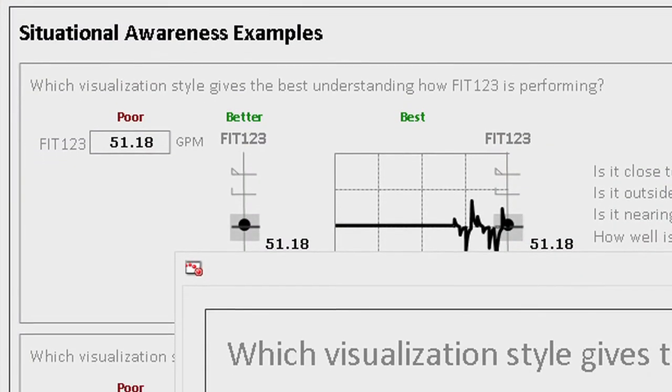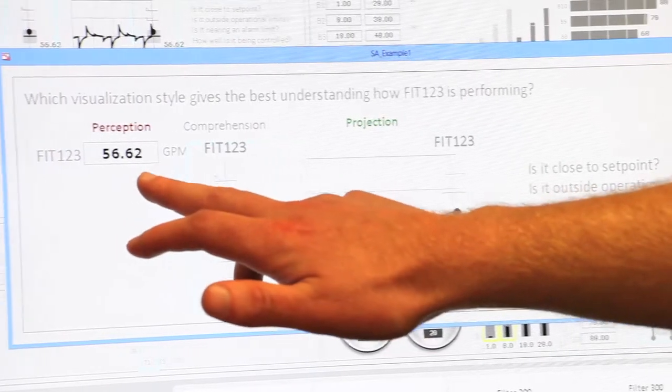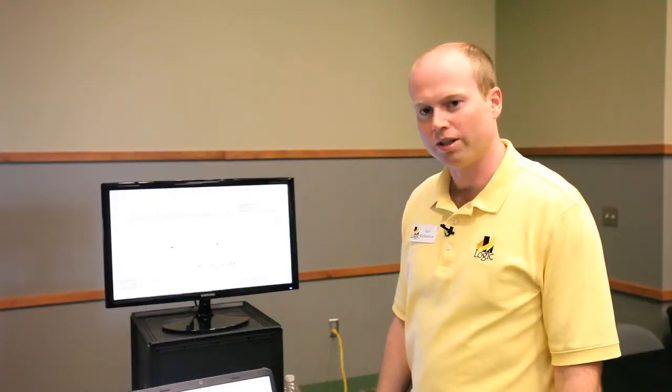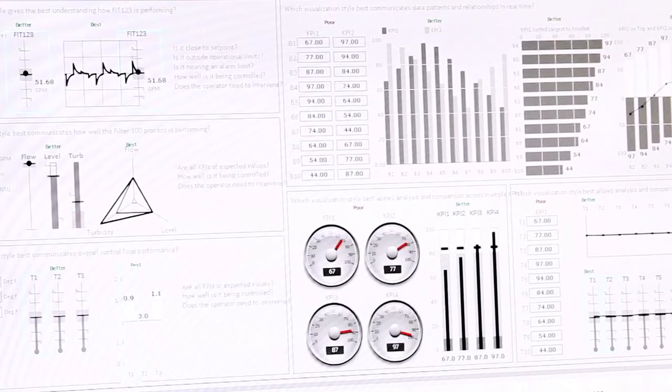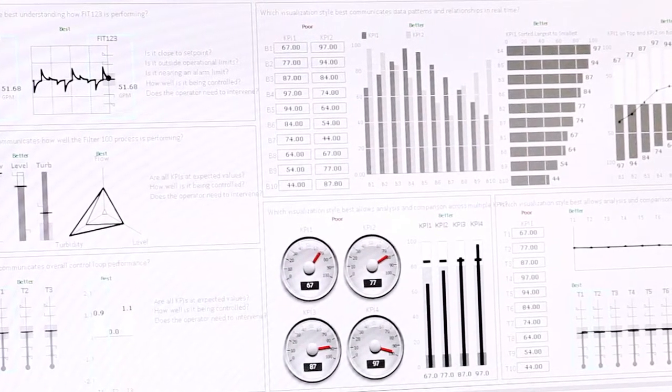Let's look at a simple example. Here we see a data point, right now it's at 56. This might be a tank level. Traditionally we just display the value on the screen, but with the new graphics library we're able to make the operator more situationally aware.